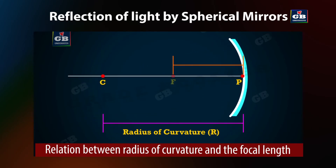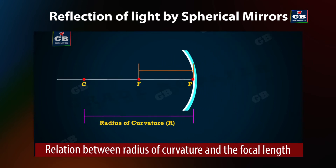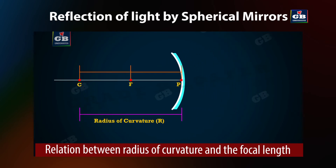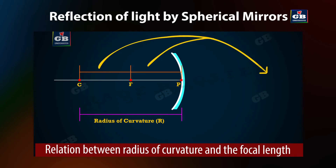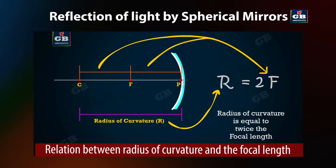Let us see the relation between the radius of curvature and the focal length. For spherical mirrors with small apertures, the radius of curvature is found to be equal to twice the focal length. We write it as R = 2f, or f = R/2. This means the principal focus of a spherical mirror lies midway between the pole and the center of curvature.